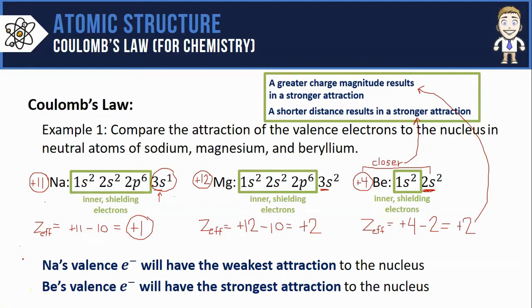At the same time I can say that beryllium's valence electrons will have the strongest attraction to the nucleus because they are closer to it and have a greater effective nuclear charge or a greater charge magnitude.